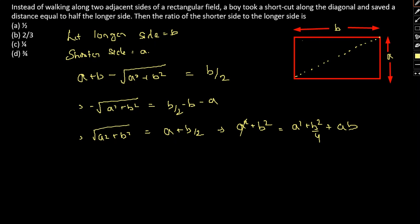So A square gets cancelled. So we have B square minus B square by 4. So this will simply come out to be 3B square by 4 equal to AB. So if we cancel out B, therefore 3B will be equal to 4A. So 3 by 4. So option B is the correct answer.